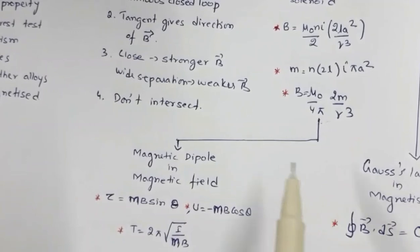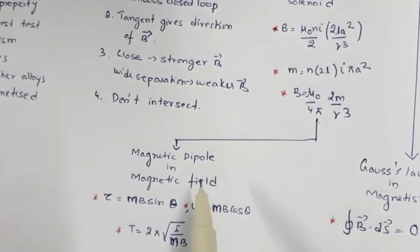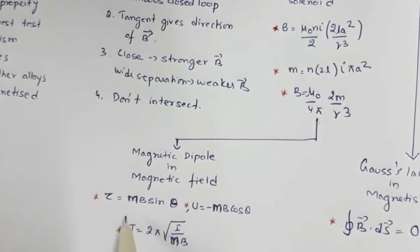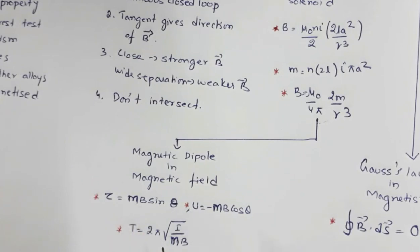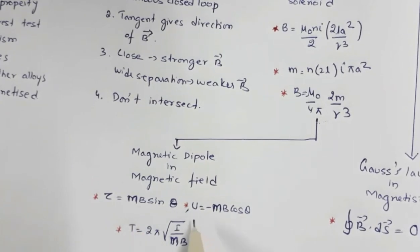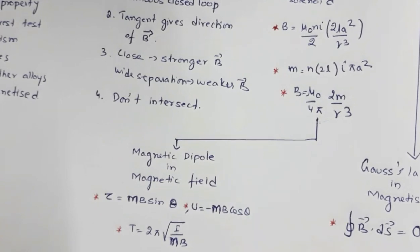Then you have a magnetic dipole placed in an external magnetic field. The expression for torque is tau = mb sinθ, where m is the magnetic dipole moment, b is the strength of the magnetic field, and θ is the angle between them. The potential energy of the dipole is U = −mb cosθ.